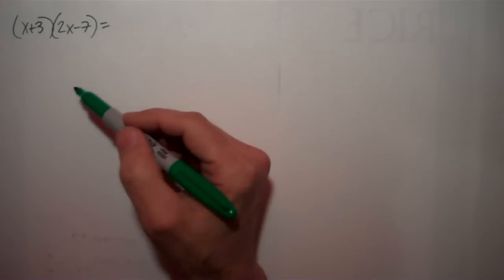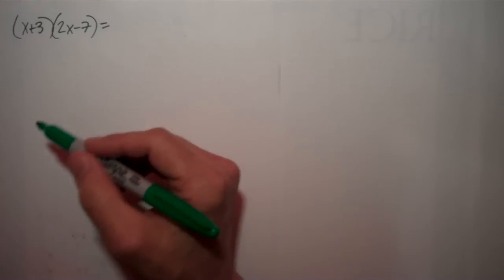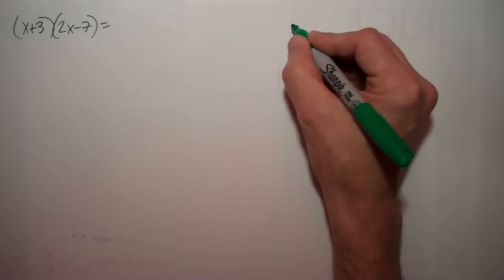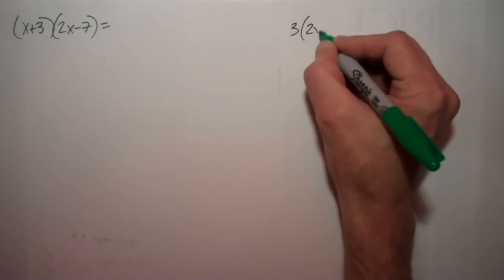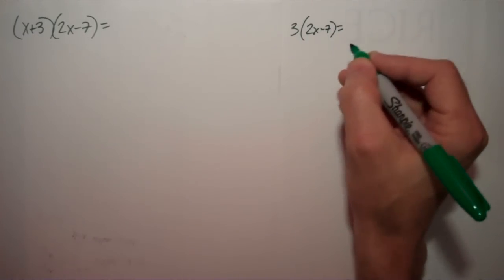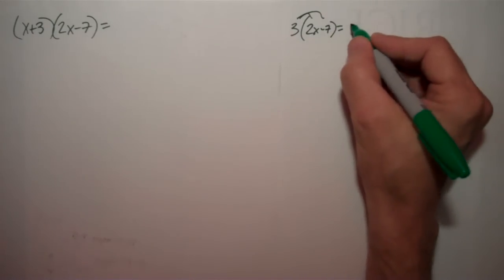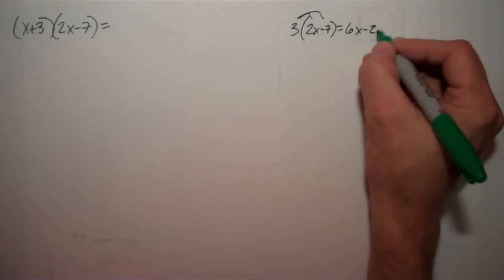Now, multiplying one term times a binomial is pretty easy. For example, if I have 3 times 2x minus 7, that would be simple. You just distribute the 3 across this and say, this is going to be 6x minus 21.